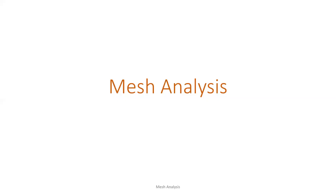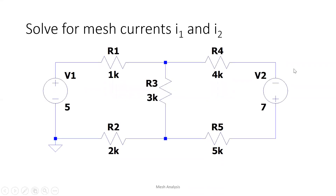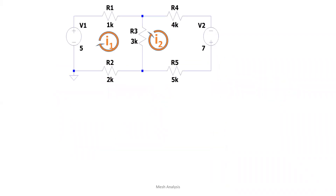Previously on mesh analysis. We have a circuit diagram and need to solve for mesh currents I1 and I2. There are two meshes and therefore two equations. We already set the current direction clockwise. Next is to perform KVL per mesh.